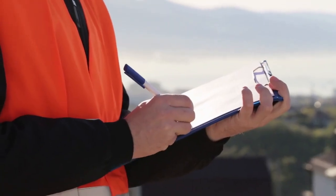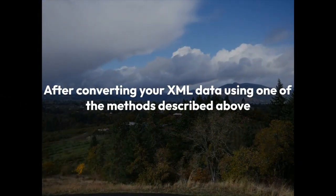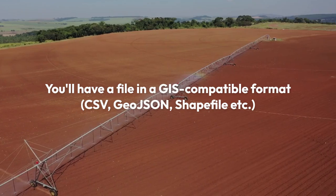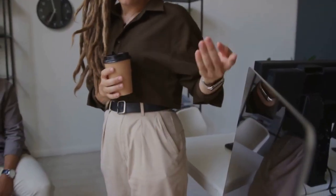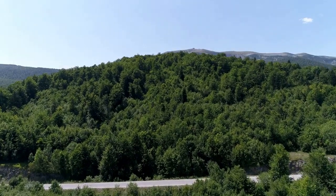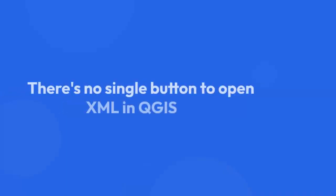Step 4: Importing the converted data. After converting your XML data using one of the methods described above, you'll have a file in a GIS-compatible format — CSV, GeoJSON, Shapefile, etc. Import this new file into QGIS using the appropriate method, for example Layer > Add Layer > Add Vector Layer. Ensure that the Coordinate Reference System (CRS) of the newly imported data is correctly defined. You might need to manually set the CRS if QGIS does not automatically detect it.